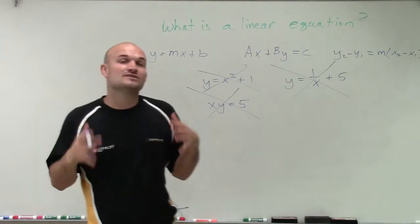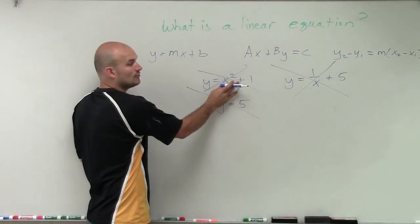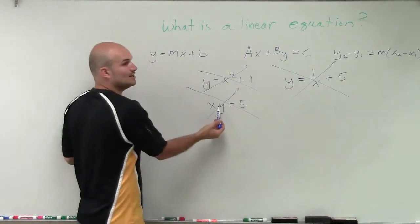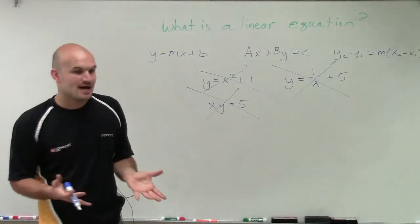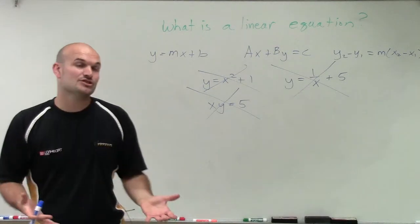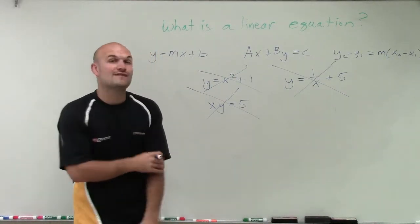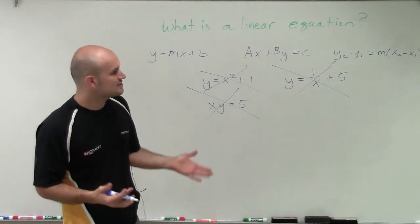So the main important thing again for linear equations is you can't have powers that are other than 1 for your variables. You cannot have a variable in the denominator, nor can you have two variables, x and y, being multiplied by each other. Besides that, when looking at a linear equation, it has to produce a line and have a constant rate of change.